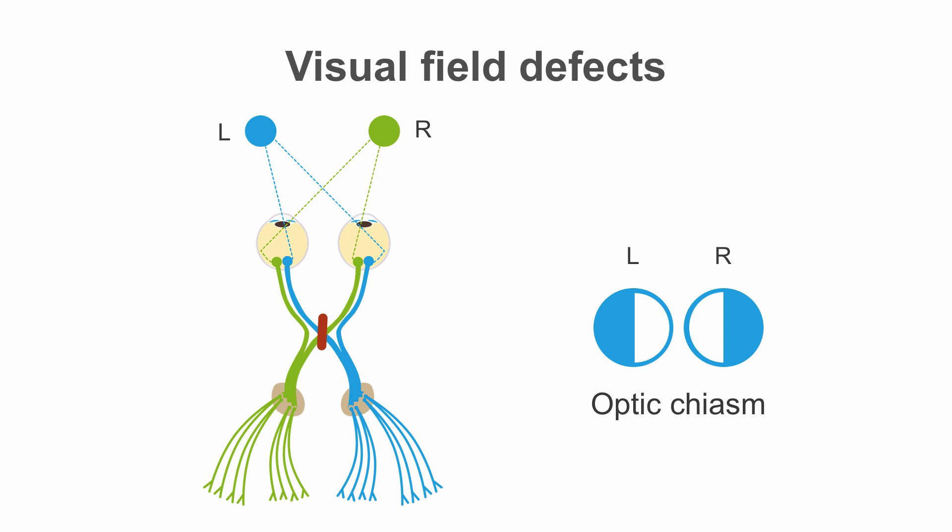Lesions in the optic chiasm will lead to bitemporal hemianopsia, where vision in the temporal fields of both eyes is lost. Lesions of the optic tract will lead to congruent hemianopsia, a loss of vision on the same side in both eyes.